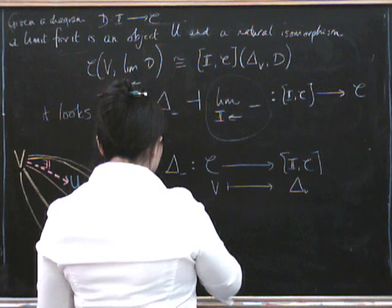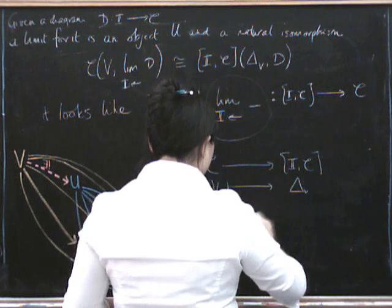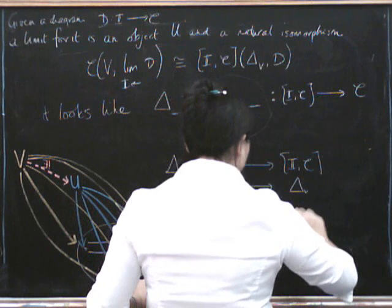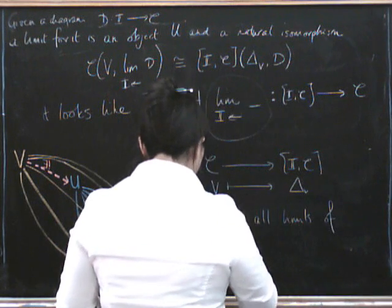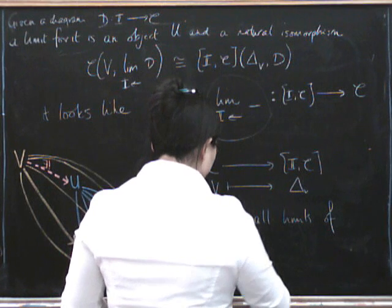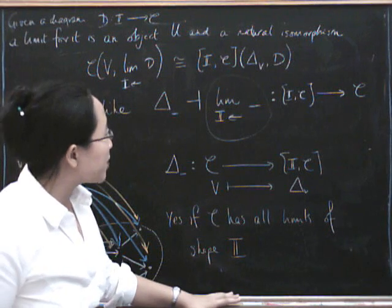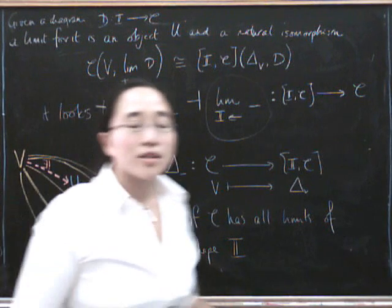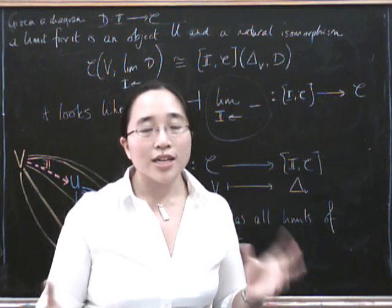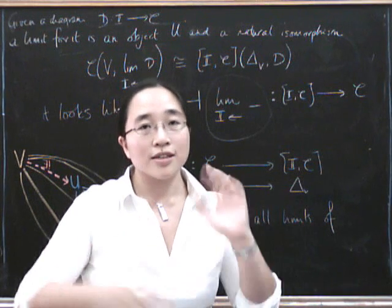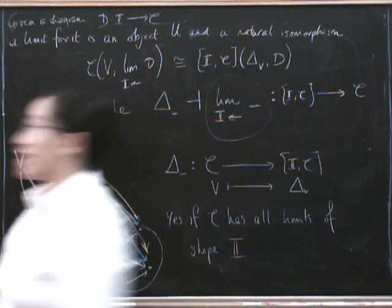This is true if C has all limits of shape I. This gives us a rather nice relationship between limits and adjunctions, and it's part of a whole categorical picture where everything is really an example of everything else, all tied together in a nice little network.